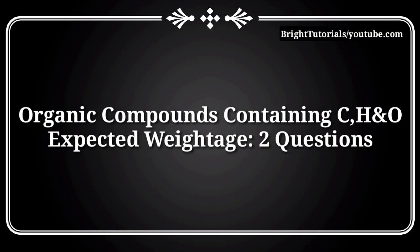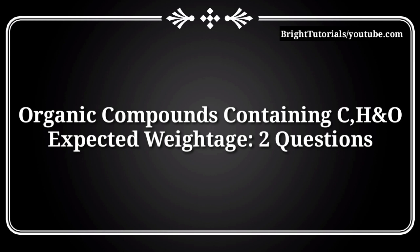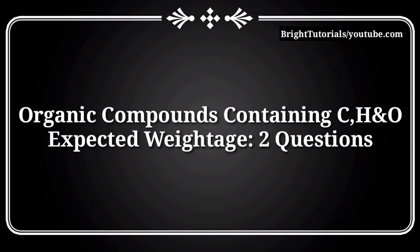Start with the chapter Organic Compounds containing Carbon, Hydrogen, and Oxygen. This chapter contains two bits in MSET. Important topics include preparation, chemical reactions, name reactions, and physical properties.